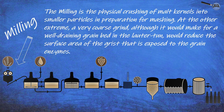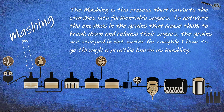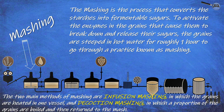Mashing is the process that converts the starches into fermentable sugars. To activate the enzymes in the grains that cause them to break down and release their sugars, the grains are steeped in hot water for roughly one hour in a practice known as mashing.